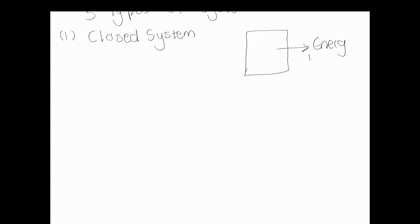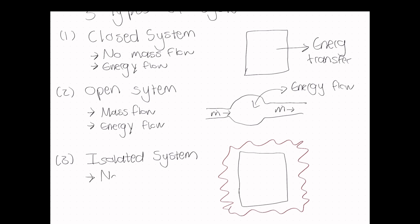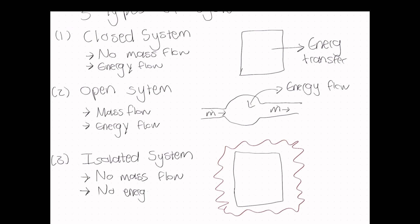Closed systems have no mass flow, but have energy flow. Secondly, is the open system, which has mass flow and energy flow. And lastly, you have your isolated system, which has no mass flow and no energy flow.